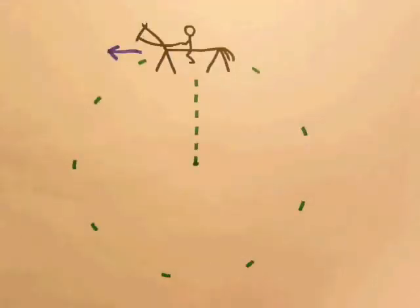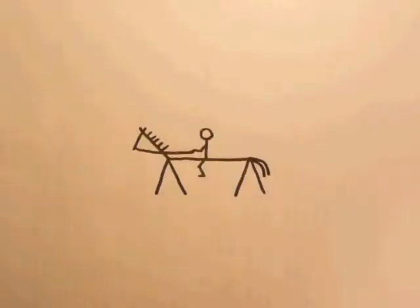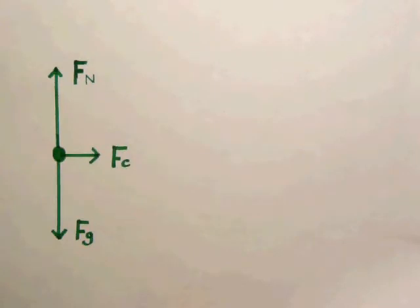Ideally, the magnitude of the velocity vector will not change. There are many forces acting on the horse and rider. First, there is the gravitational field force pointing down. Next, there is the normal force pointing up. And there is the centripetal force pointing toward the center of the circle.